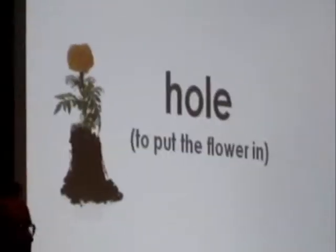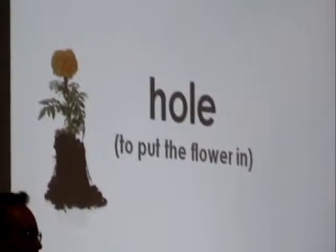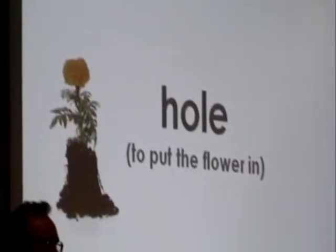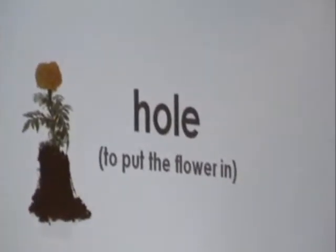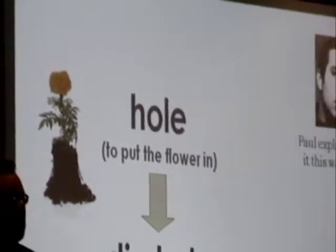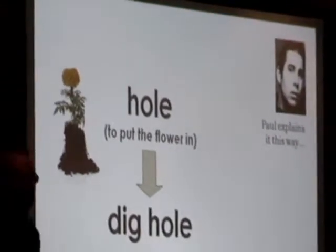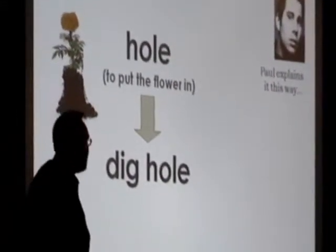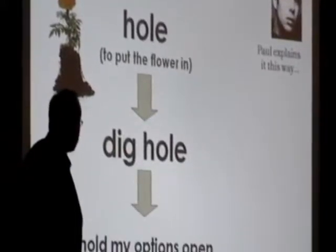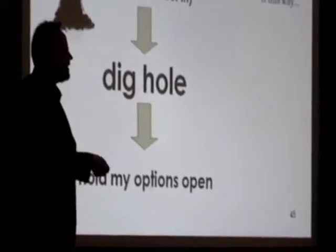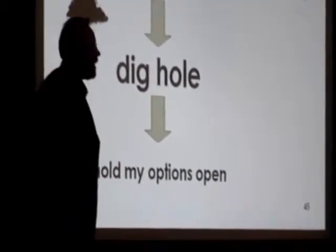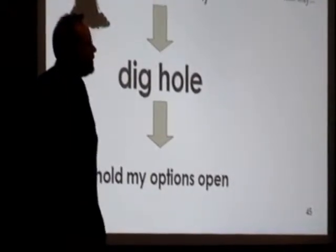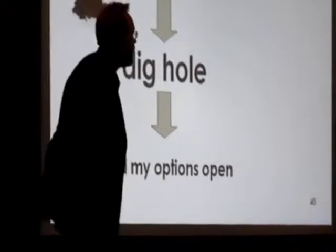Let's go through this model one more time with an example. If I've got this flower and I want to plant it in the ground, what I need is a hole. The thing that I'll do is dig the hole, and if I know that I need to dig a hole, I can find any number of tools that will satisfy. Paul's strategy is to say: as a gardener, I want to dig a hole so that I can plant a flower.